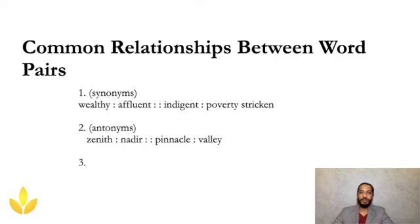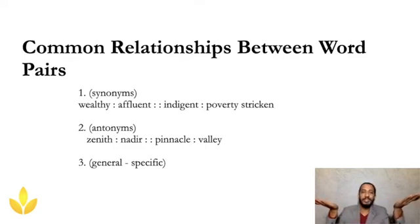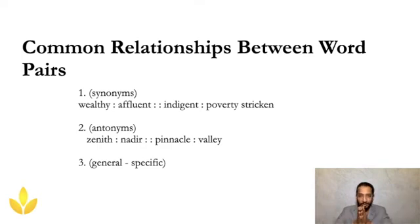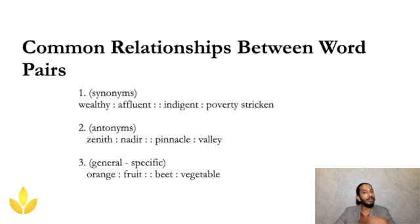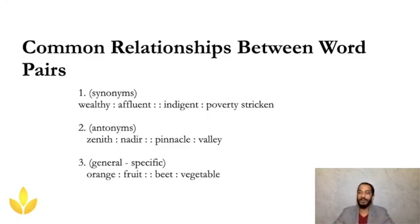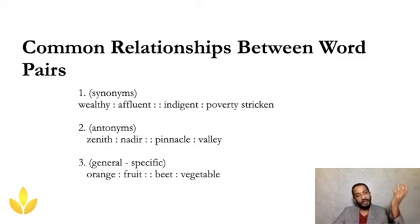General versus specific — something general to something very specific. A sports bike is very general; a Ducati Monster is very specific about which sports bike we're talking about. Now, orange is to fruit as beet is to vegetable. Orange can be a color, but here it's specified as a fruit. A beet — beetroot — is a vegetable, not a fruit. So orange is general, fruit is specific; beet is general, vegetable is specific.